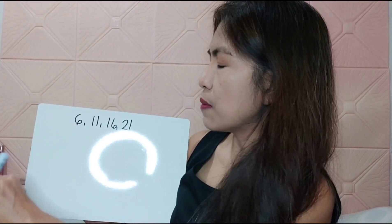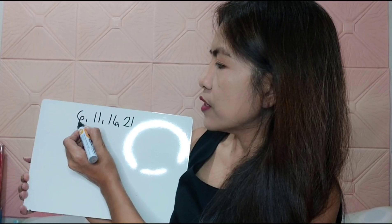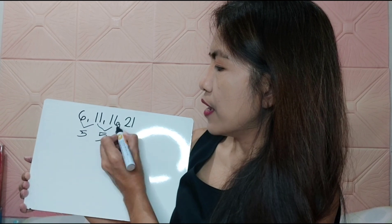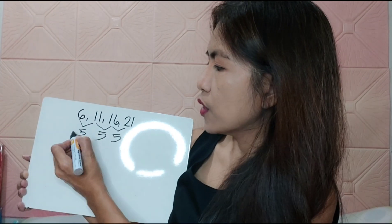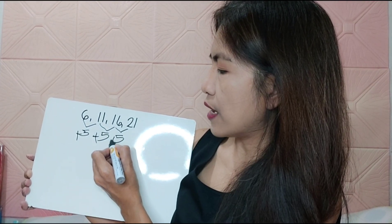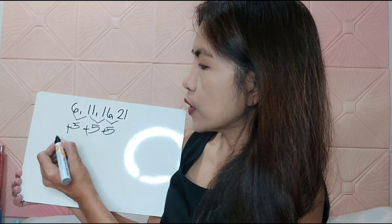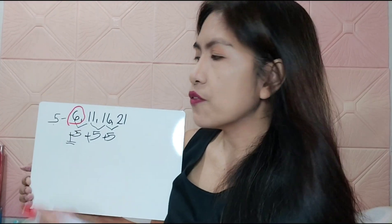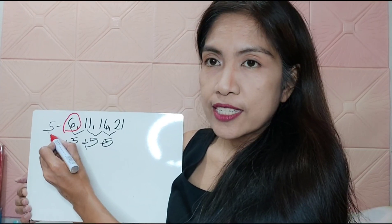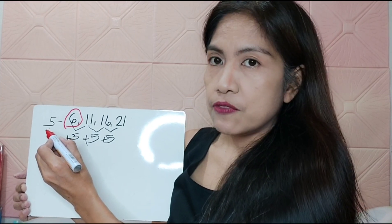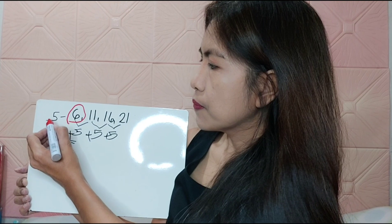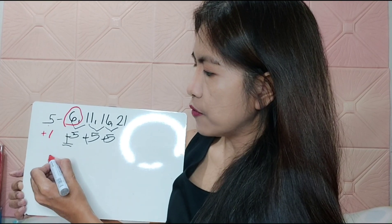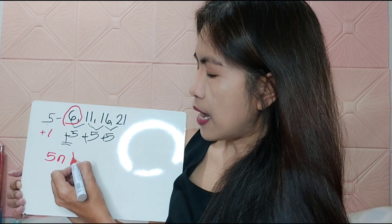Another example: we have the number sequence 6, 11, 16, and 21. The difference between 6 and 11 is 5, then 11 and 16 is 5, and 16 and 21 is 5. So it means you add 5 each time. So what should be the formula? We subtract 5 from the first term: 6 minus 5 equals positive 1. Since the number is bigger than the number to be subtracted, it should be positive. So your formula is 5m plus 1.